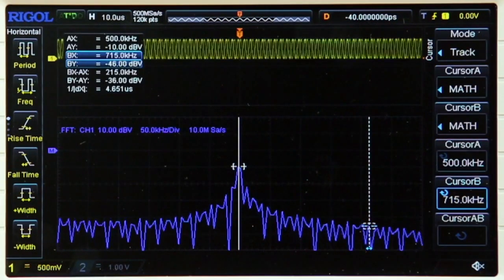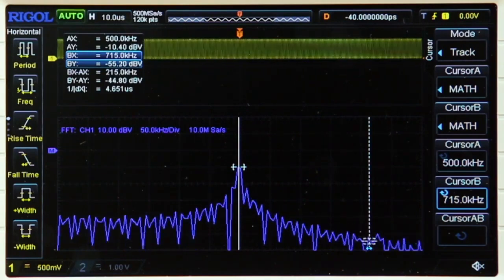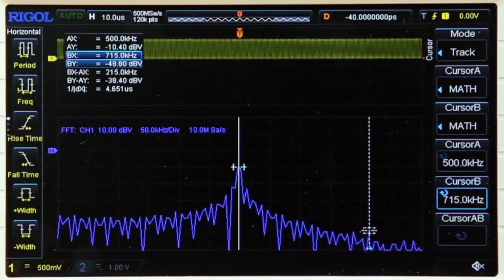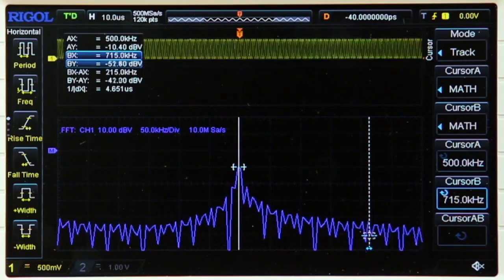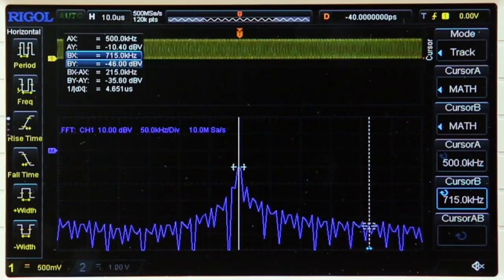The instrument also features a 16,000 point FFT function which can be used with the instrument's cursor function to allow you to easily analyze signals in the frequency domain.